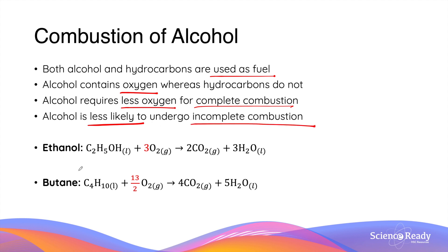Let's look at the comparison between ethanol and butane combustion. A molecule of ethanol requires three oxygen molecules for complete combustion, whereas a molecule of butane requires roughly 13/2, which is 6.5. The fact that butane requires more molecules of oxygen per mole of combustion means it is more likely to undergo incomplete combustion due to insufficient supply of oxygen.